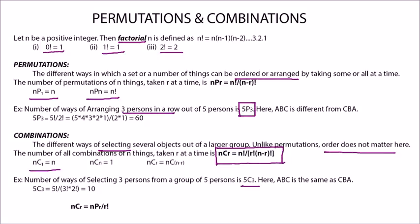nC1 is n and nCn is also 1. So nCr will be nC(n-r). And another formula, nCr is equal to nPr by r factorial.